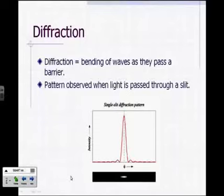One experimental evidence for light being a wave is diffraction. Diffraction refers to bending of waves when they pass through a barrier.